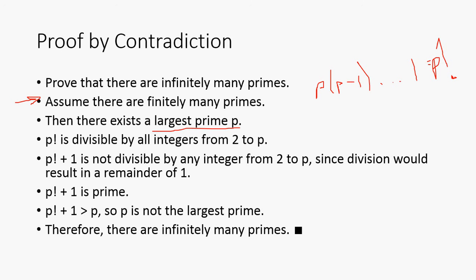If we add one, then every time we divide by each one of those integers we're going to get a remainder of one. So it's going to be a near miss for all of those. We can't divide any of those numbers from two to P into P factorial plus one. Since none of the primes before it could divide into it, P factorial plus one has to be prime. But P factorial plus one is clearly bigger than P, right? So P can't be the largest prime. Therefore there are infinitely many primes.